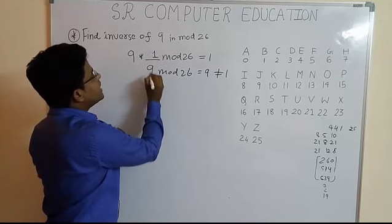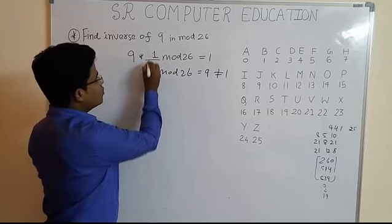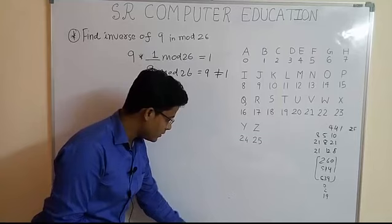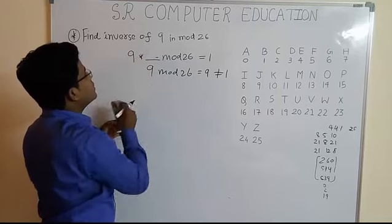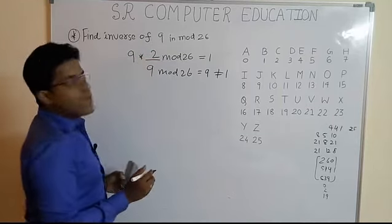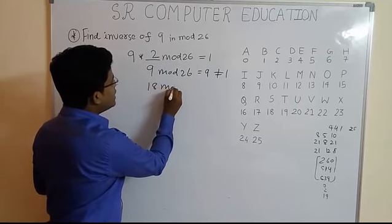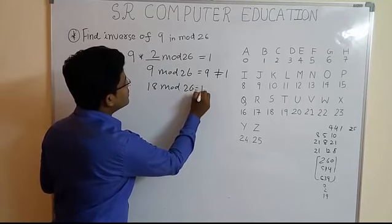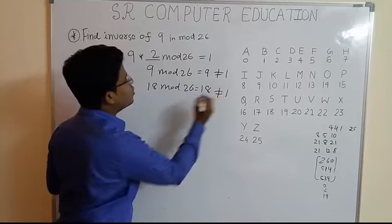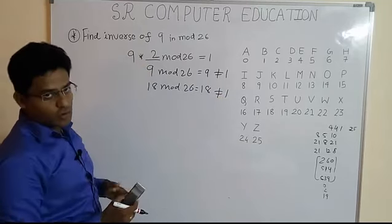Now, take next number that is 2. So, we will take here next number that is 2. 9 multiply by 2 is 18 and 18 mod 26 is again 18. This is also not equal to 1. So, 2 is also not the inverse.